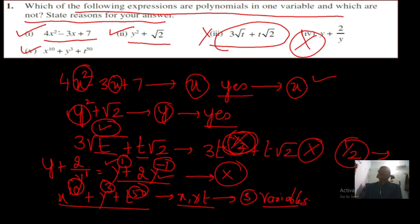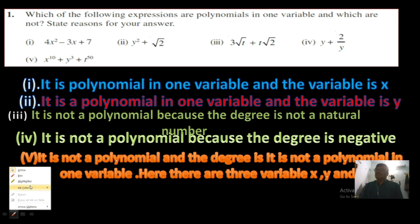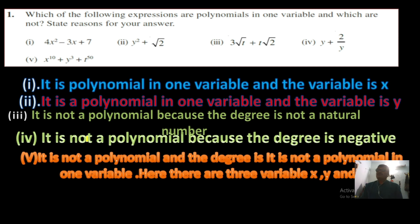To recap: the first one is a polynomial in x. The second one is a polynomial because the degree is 2. The third one has a fractional degree, so we discard it. The fourth one has a negative power of y, so it must also be discarded. The last one has proper powers but has 3 variables — x, y, and t — so it is a polynomial in 3 variables.